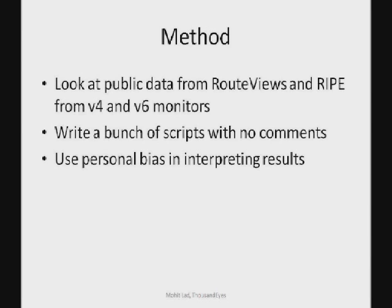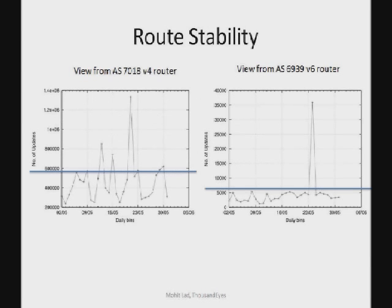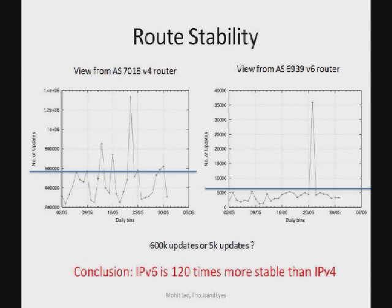So that's the theme for the rest of the talk. Let's look at route stability — what I'm trying to do here is compare IPv4 with IPv6. Clearly I can see that compared to 600K updates from IPv4 versus only 5K from IPv6, clearly v6 is 120 times more stable than v4. So that's conclusion number one.